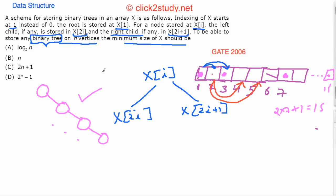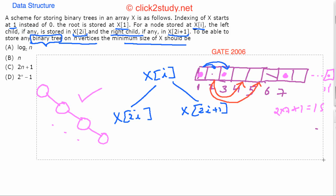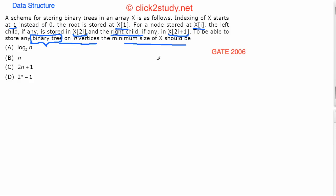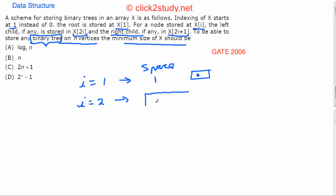This right-skewed tree takes maximum space. Since we need to store any binary tree, if we can store this sort of tree we can store any tree. For n=1 node (just the root), we need space 1. For n=2 nodes, the root goes at index 1 and the right child goes at index 3, so we need space 3.